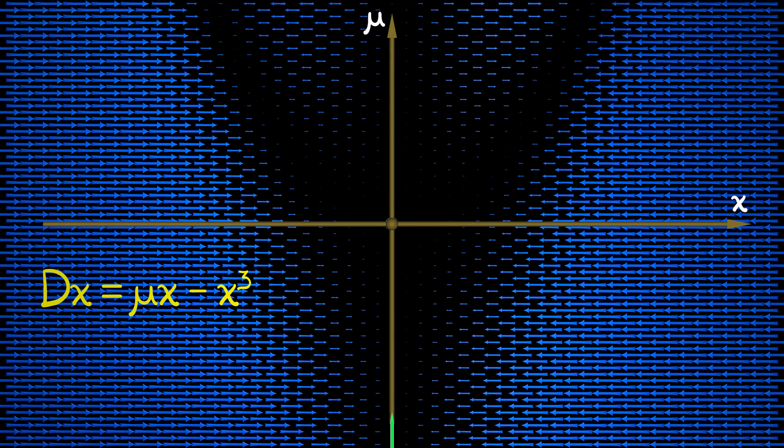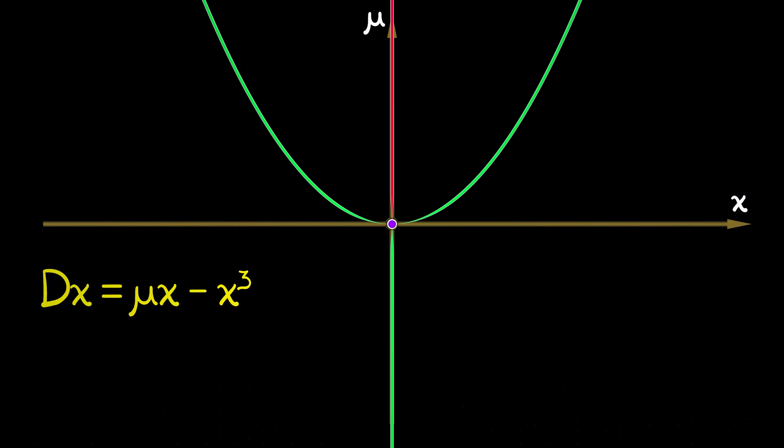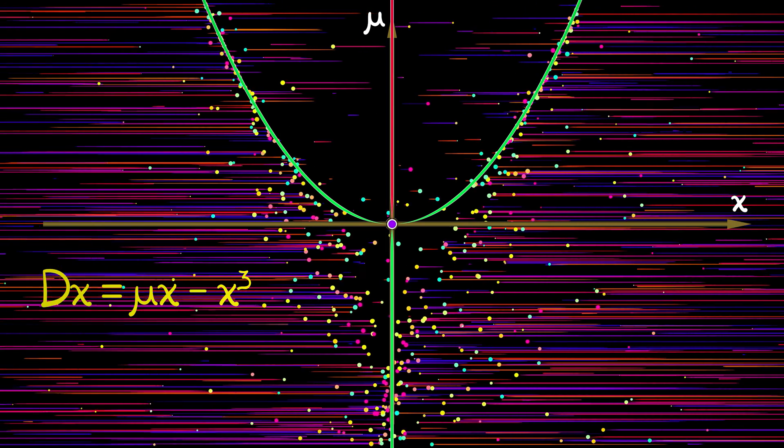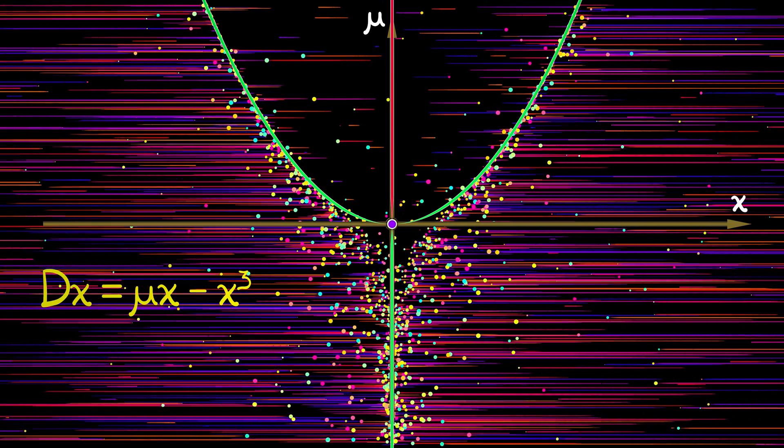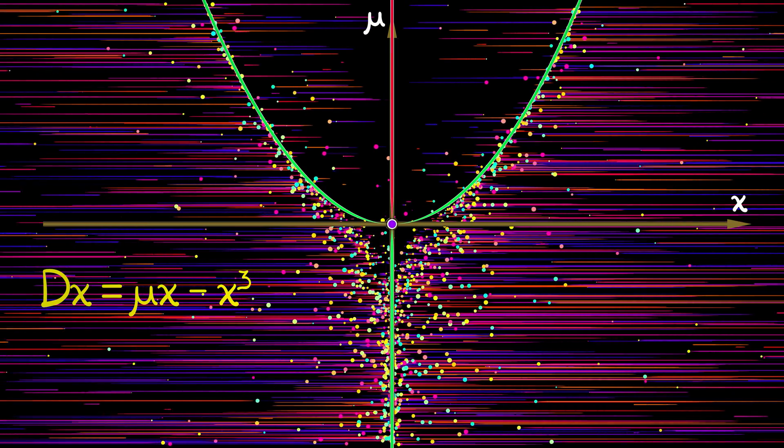We're going to do what we've been doing, that is plotting in the x versus mu plane. I pick a particular value of c, that is c equals negative 1, so I have dx equals mu x minus x cubed. There's a stable equilibrium at zero when mu is negative, unstable when mu is positive. And then I have a pair of stable equilibria going off to the sides when mu is positive.